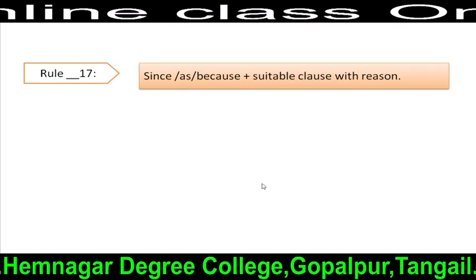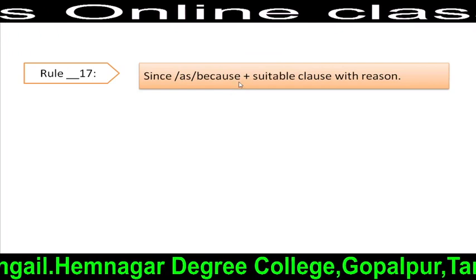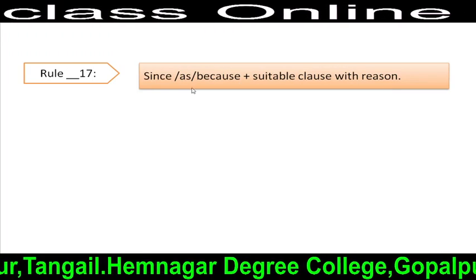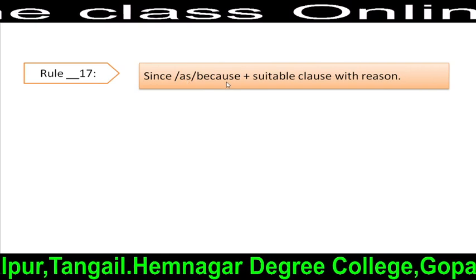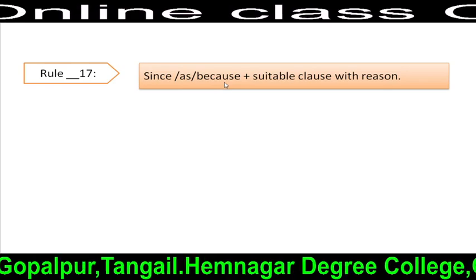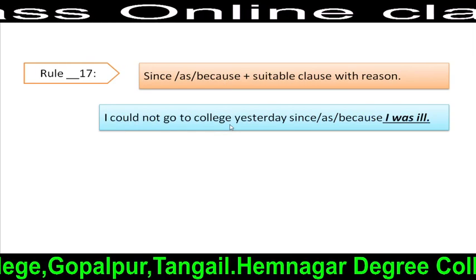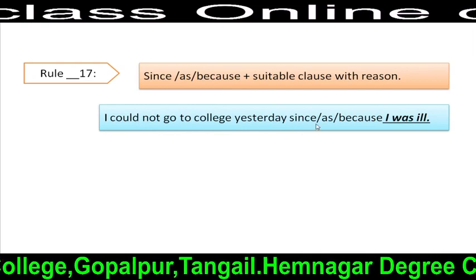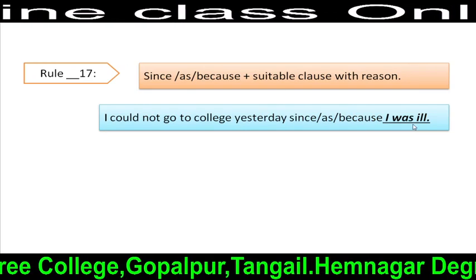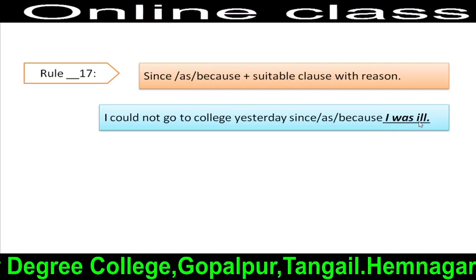Rule 17: Since/as/because + suitable clause with reason. That means, after 'since', 'as', or 'because', we have to use a clause that indicates a reason or cause. For example: 'I couldn't go to college yesterday since or as or because I was ill.' Here, 'I was ill' indicates the cause of the sentence.